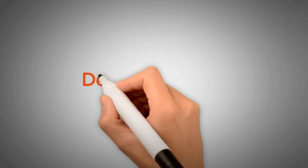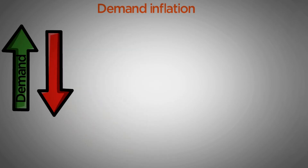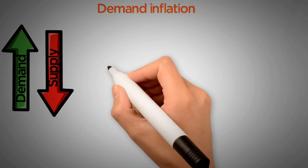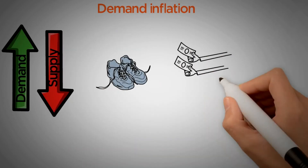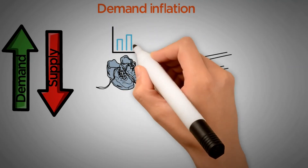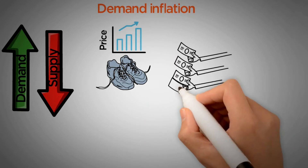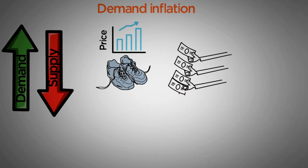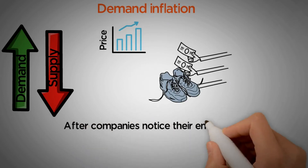First, demand inflation. Demand inflation occurs when the demand for specific products is greater than the supply. For example, if everyone intends to buy sneakers of the same brand, that price can go up because there will not be enough sneakers for all buyers. Therefore, only those who are willing to pay a higher price for the shoes will be able to get them after the companies notice that their entire stock is being bought out.